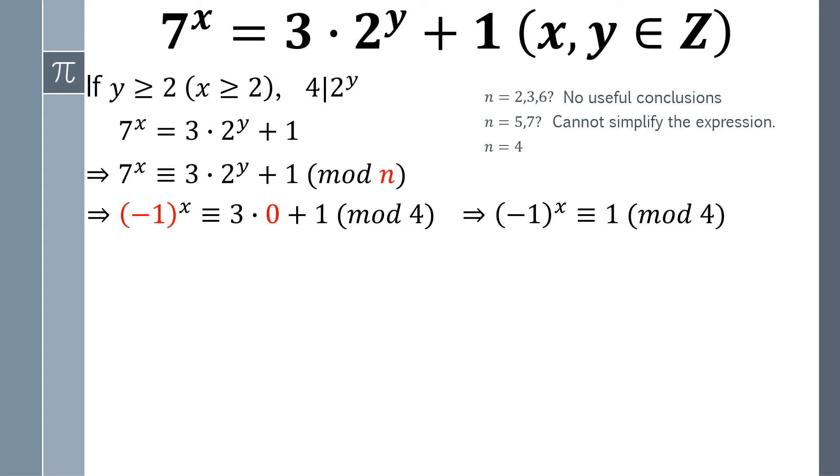Apparently from here, we can draw a very important conclusion. That is, x is even number. Since x is even number, we let x be 2 times x0.